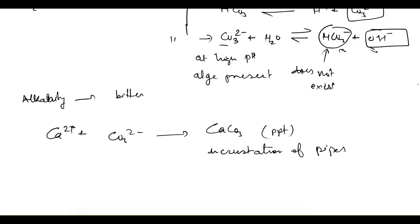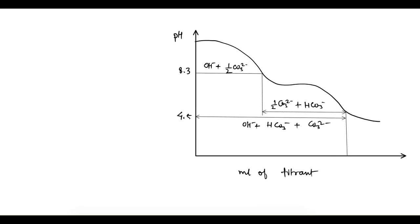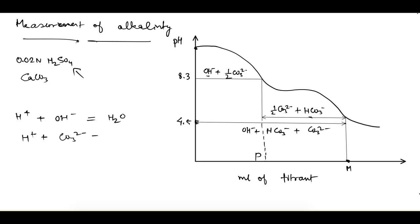To understand how we measure alkalinity: alkalinity is measured with the help of titration, and we do the titration with 0.02N H₂SO₄. It is expressed in terms of calcium carbonate equivalent. We are adding acid, meaning we are providing hydrogen ions. These hydrogen ions react with the alkalinity-causing ions: first they react with hydroxide ions (H⁺ + OH⁻ → H₂O), then they react with carbonate ions to give bicarbonate ions.